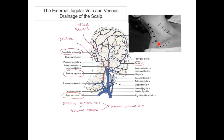This must not be mistaken for the internal jugular vein, which is what we use to assess a patient's jugular venous pressure. The internal jugular vein runs much deeper, deep to the sternocleidomastoid muscle. The external jugular vein runs in the superficial cervical fascia of the neck, just beneath the layer of skin.